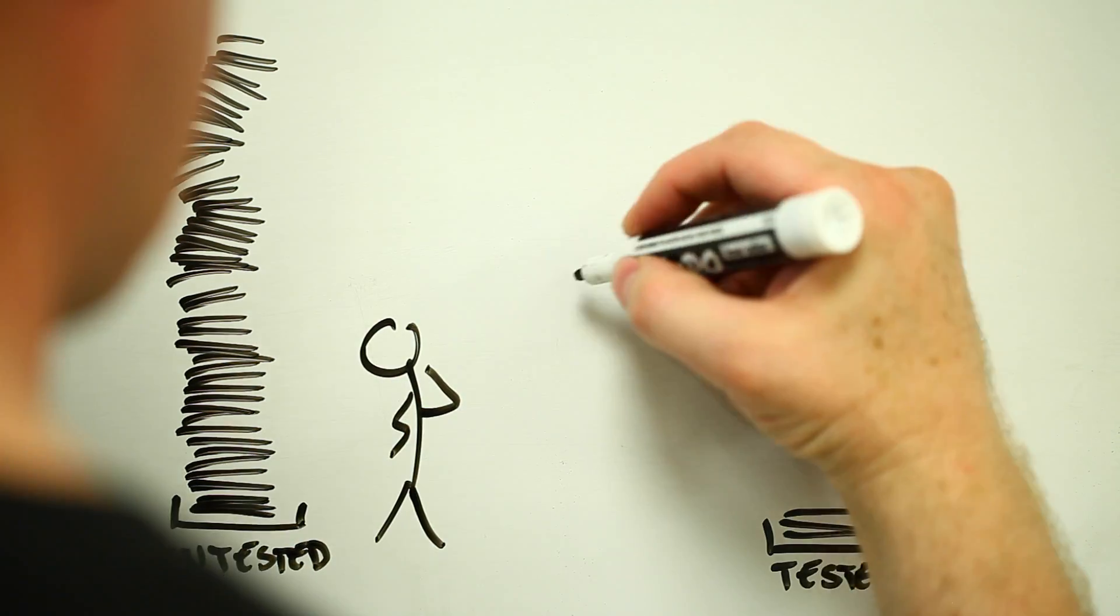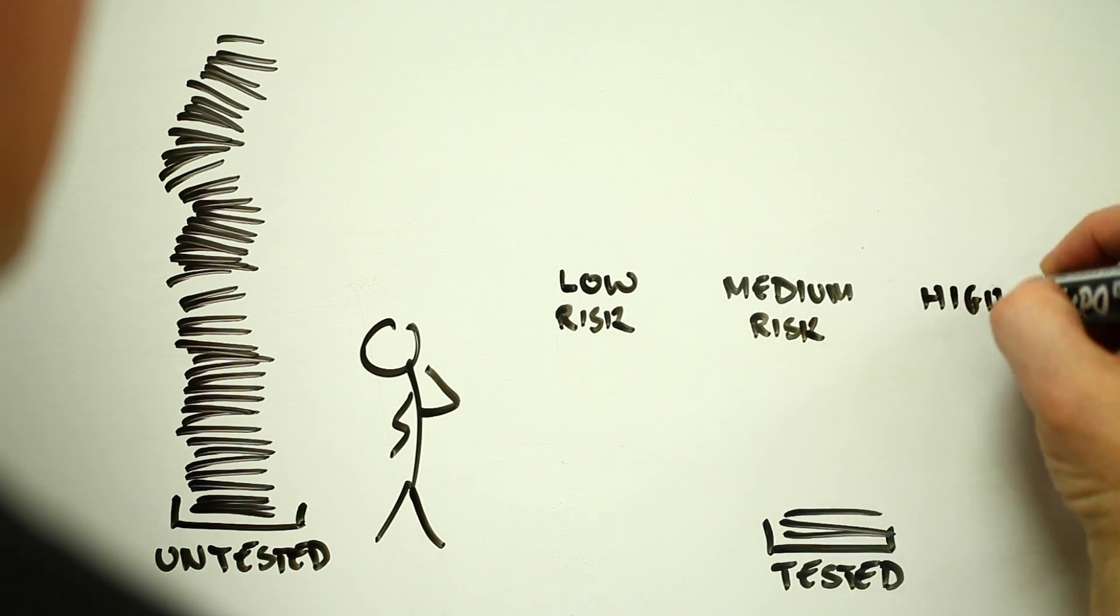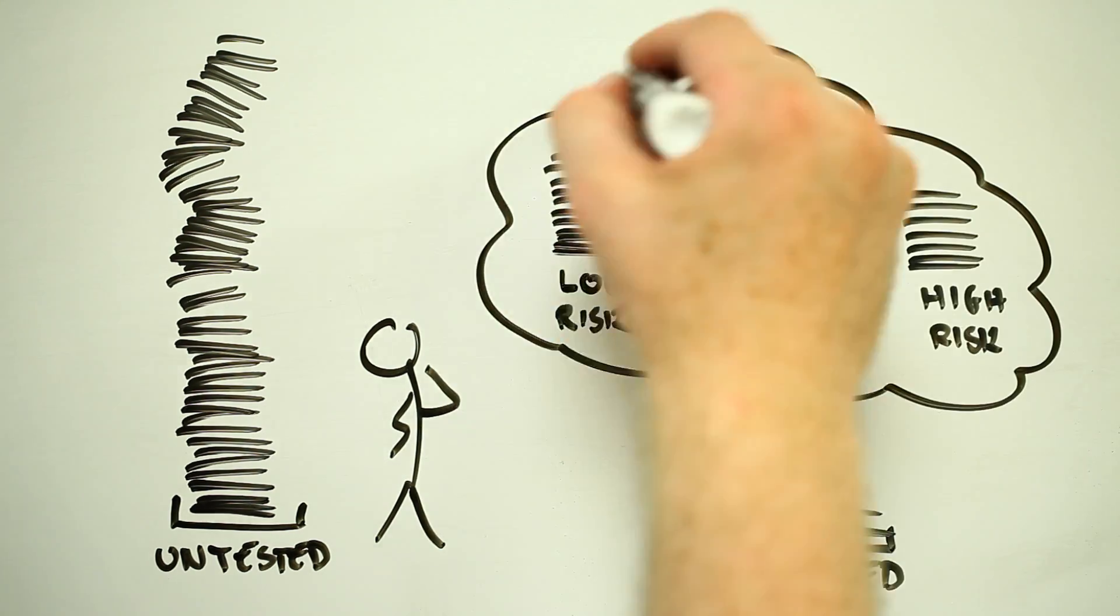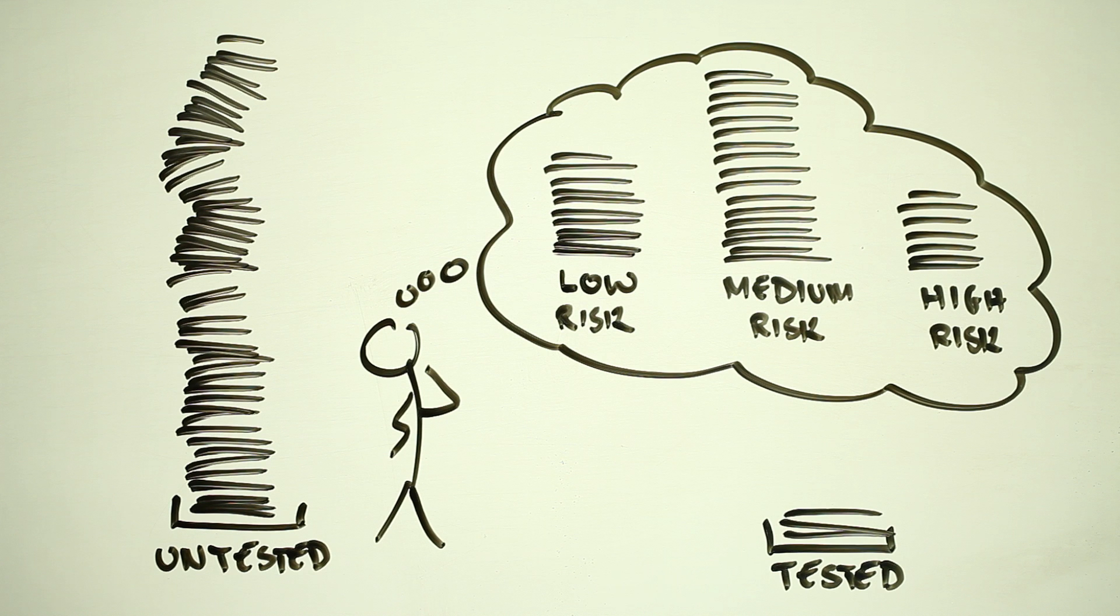Most importantly, they need some way of triaging the waiting list of untested chemicals to see which ones are in most urgent need of attention.